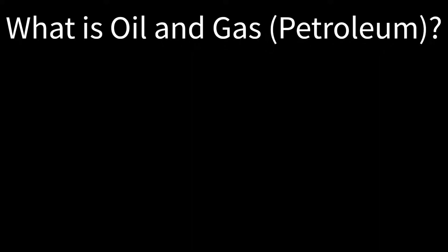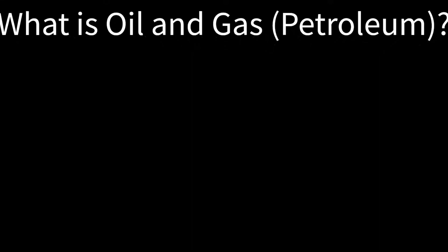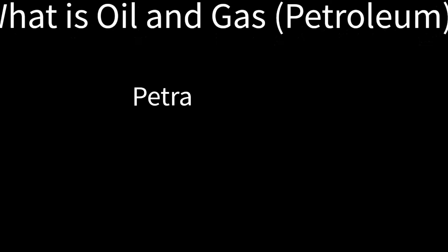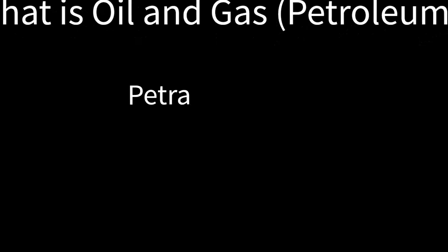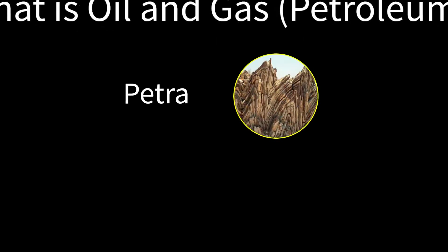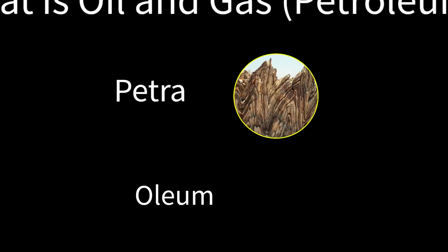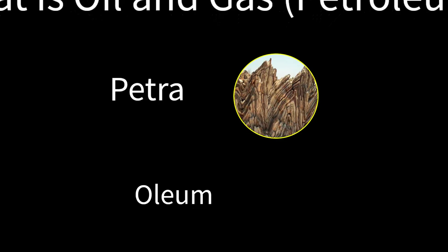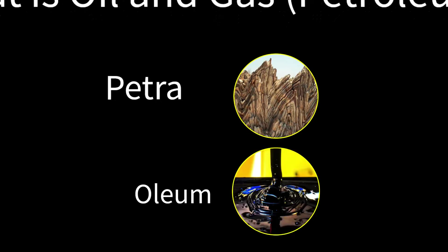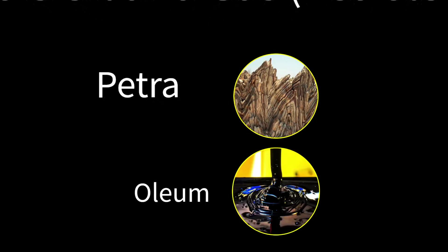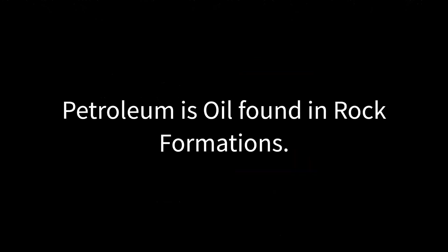Petroleum is derived from the Latin words 'petra,' meaning rock, and 'oleum,' meaning oil. So to put it simply, petroleum is oil found in rock formations. But how does oil get into rocks in the first place?